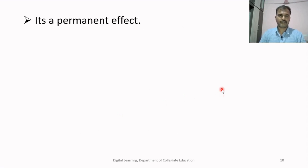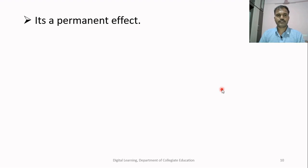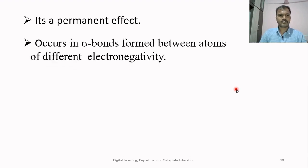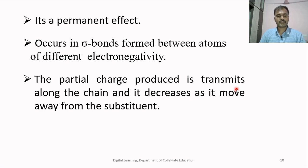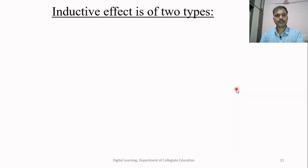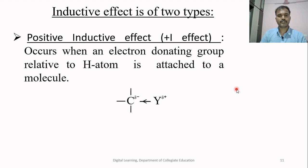Key points about the inductive effect: it is a permanent effect, as displacement takes place due to the presence of an atom or group in the molecule. It occurs in sigma bonds formed between atoms of different electronegativity. The partial charge produced transmits along the chain and decreases as it moves away from the substituent. The inductive effect is of two types: positive inductive effect (+I effect) and negative inductive effect (-I effect). The +I effect occurs when an electron-donating group relative to hydrogen is attached to a molecule.